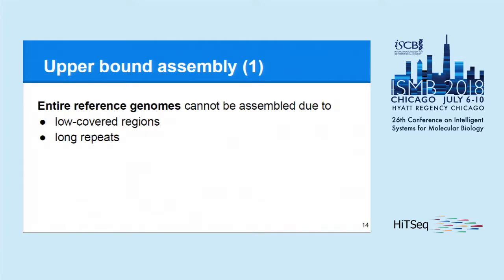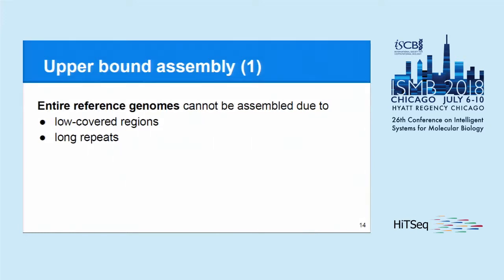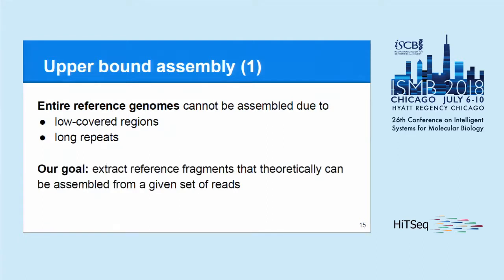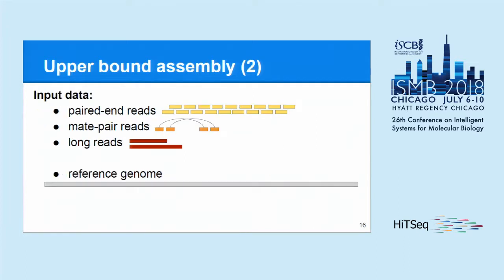Let's start with the upper bound assembly concept. There are two key reasons why an entire reference genome cannot be computationally reconstructed completely. The first is low-covered regions, in particular regions of zero coverage. The second is long genomic repeats, which tangle assembly graphs and prevent their unambiguous traversal. Our goal was to find the fragments of the reference that can be theoretically reconstructed by assembly given a set of reads.